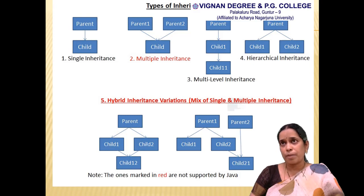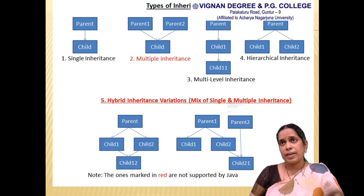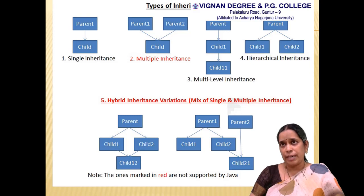The fourth type is hierarchical inheritance: from a single parent class, we can derive two or more child classes. The last type is hybrid inheritance, which is a combination of any two types of inheritance — for example, a combination of single and multiple inheritance, or multiple and multilevel inheritance.